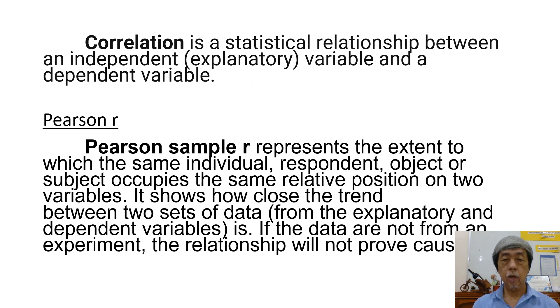Pearson sample R represents the extent to which the same individual, respondent, object, or subject occupies the same relative position on two variables. It shows how close the trend between two sets of data from the explanatory and dependent variables is.